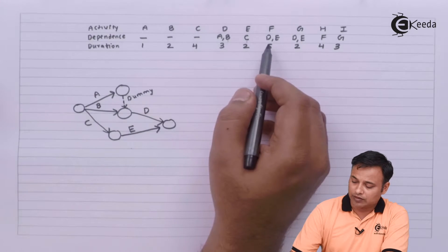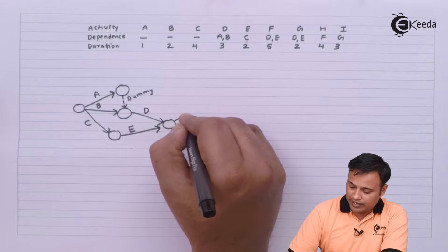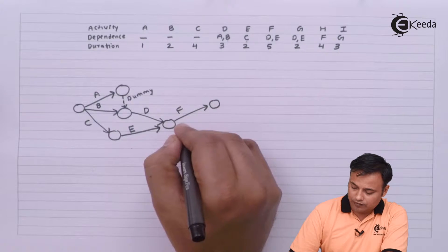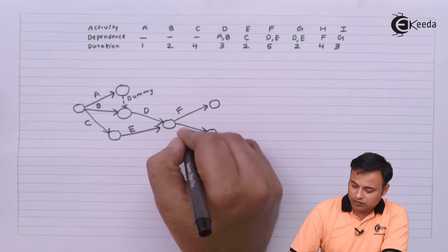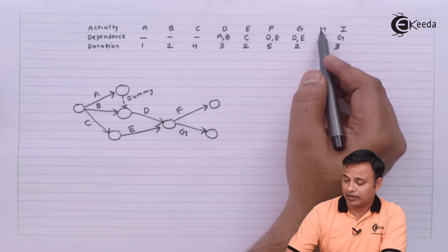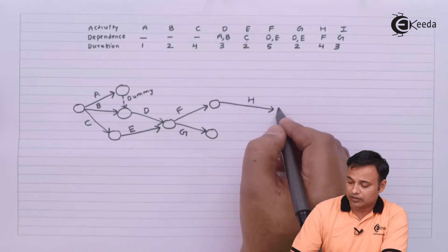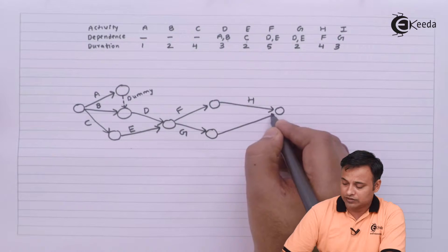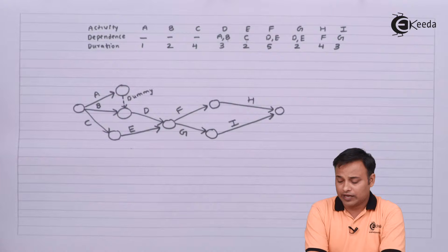Now, once D and E are combined, I will have F and G. After F I will have H as a final activity, and I will be after G as the final activity. So we are done with the diagram.